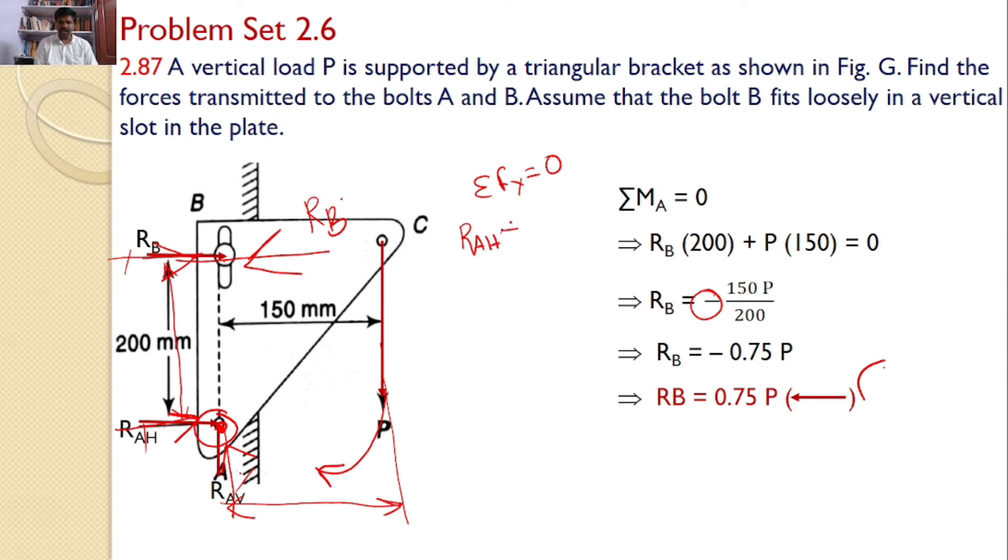RAH plus RB equals 0. Or you can say RAH equals minus RB and it is minus of minus 0.75P. So, this is 0.75P. RAH equals 0.75P.